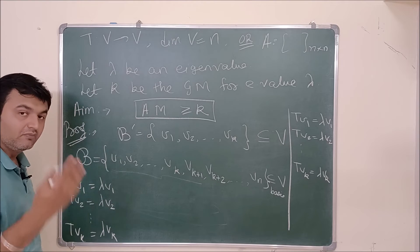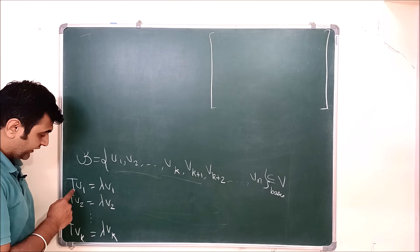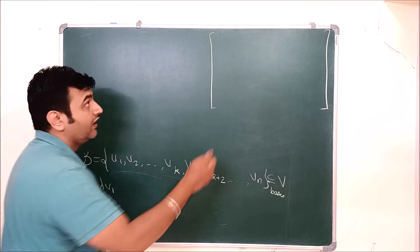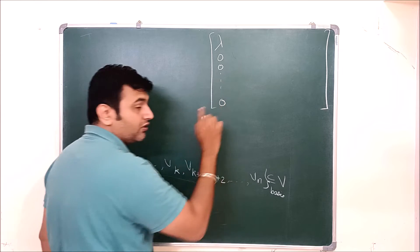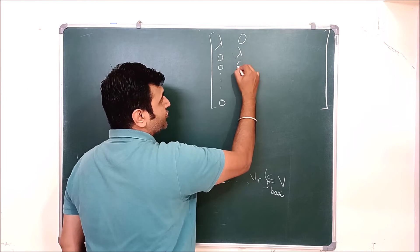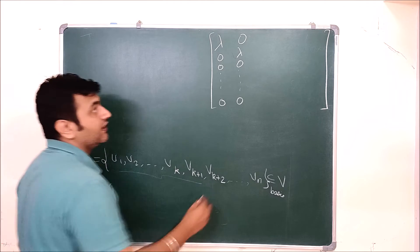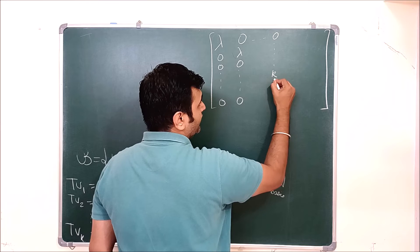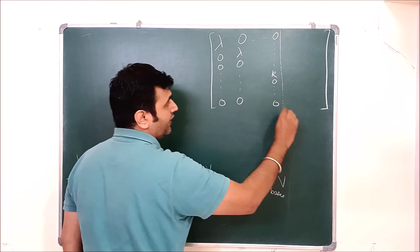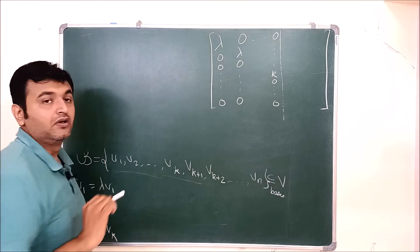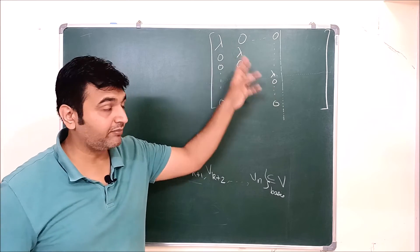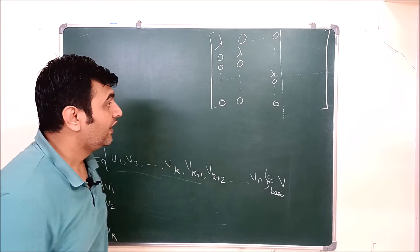T(v1) = λv1 + 0·v2 + ... + 0·vn, so the first column is (λ, 0, 0, ..., 0). T(v2) = 0·v1 + λv2 + 0·v3 + ... + 0·vn, so the second column is (0, λ, 0, ..., 0). Continuing up to vk, the first k columns produce a k×k scalar matrix with λ on the diagonal. The block in the top-left corner is λ·I_k and the block below it is zero.